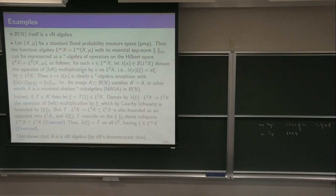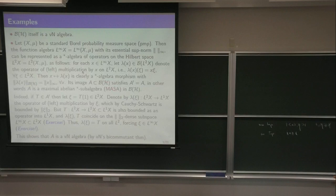Now, the image of this algebra — again, this is B(L²) — satisfies that its centralizer is A itself. Now A is abelian, so what this says is that A, actually in here, is maximal abelian. I will abbreviate this as a MASA in B(L²). Indeed, so how do you prove that? This is instructive, so let's show it.